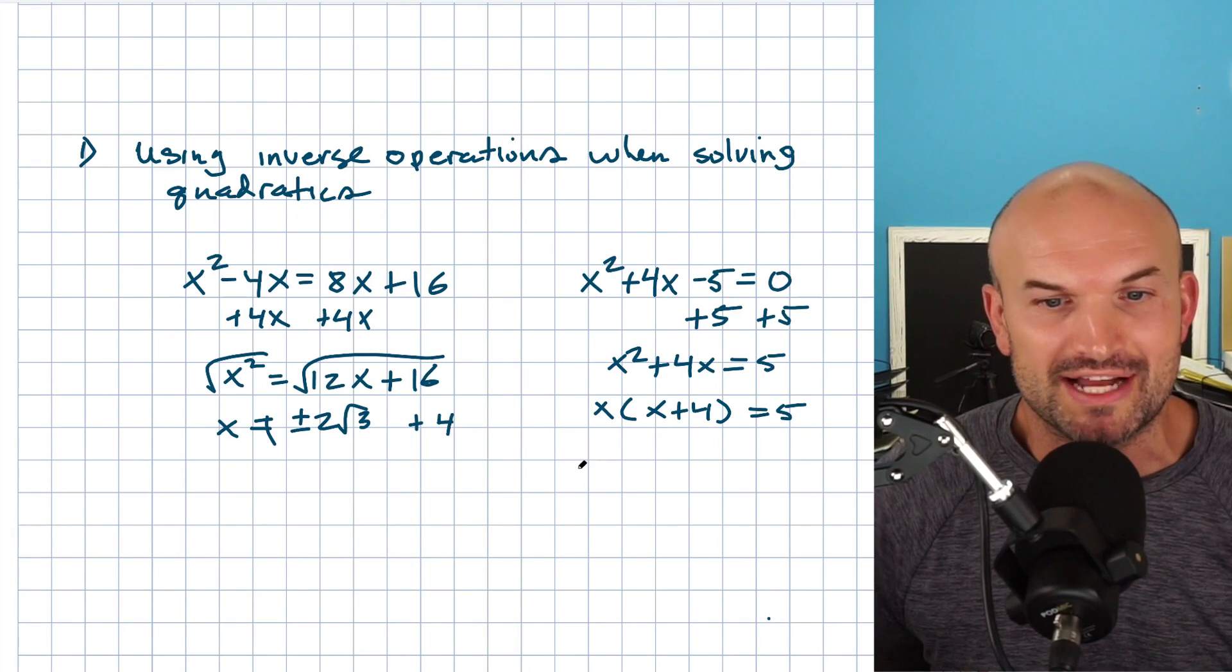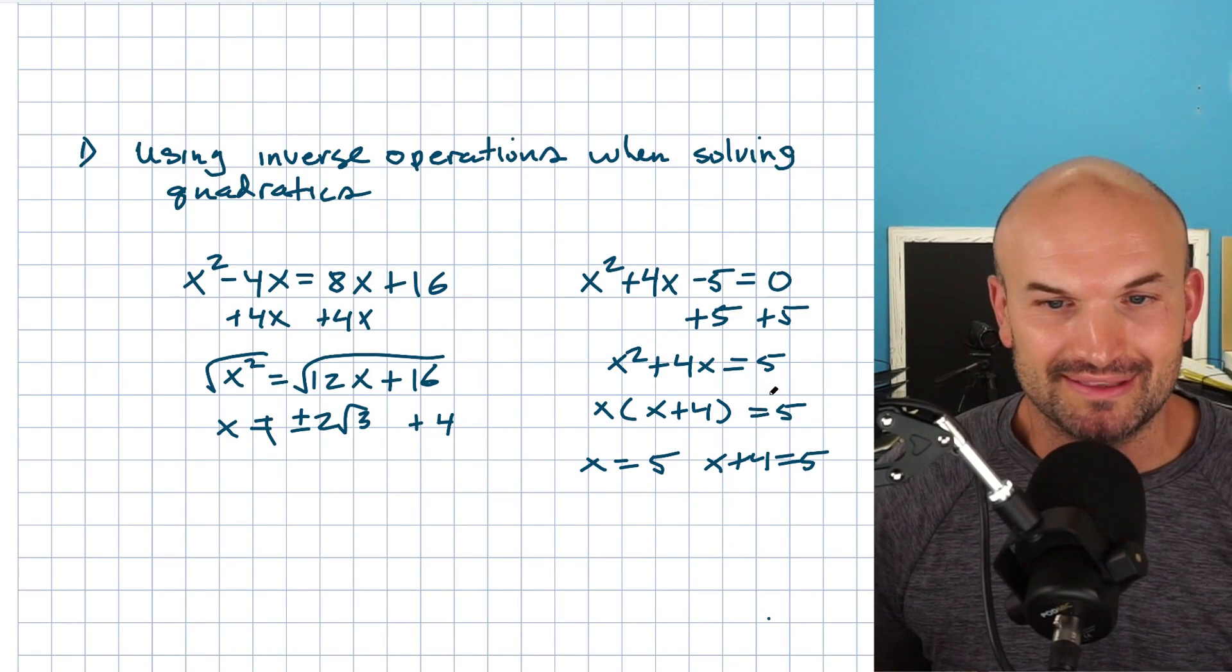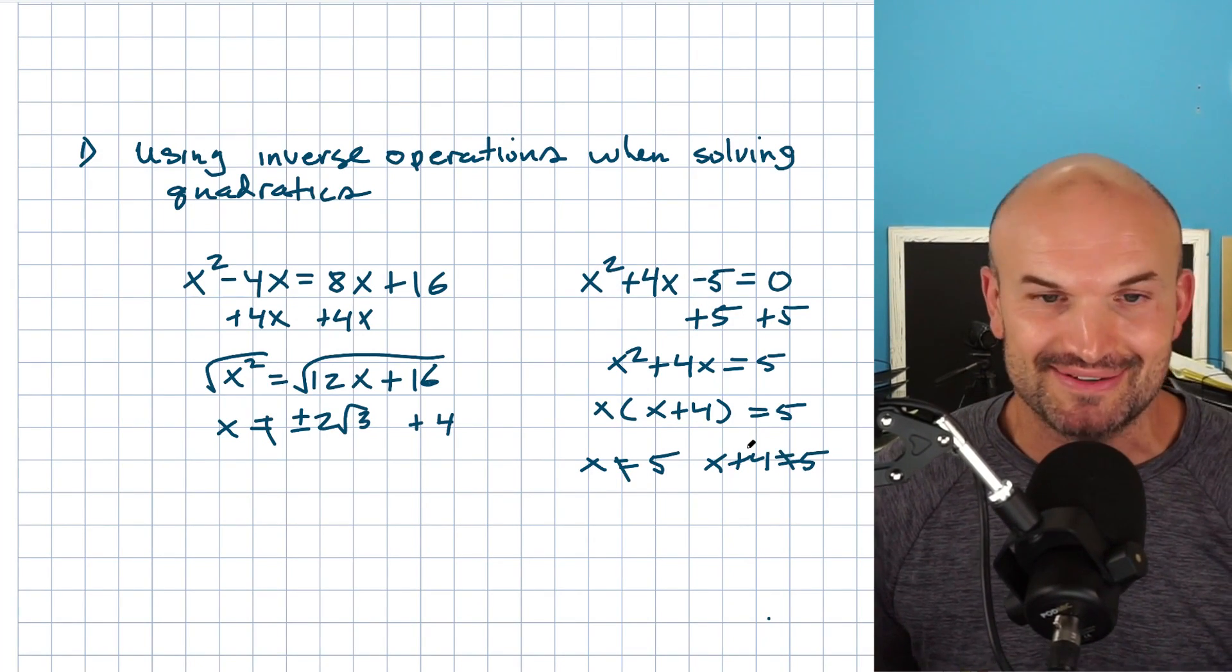And then I have an X times an X plus four equals five. And then let's use the zero product rule. X equals five and X plus four equals five. And again, hopefully you're following me. Ladies and gentlemen, this is not correct, right? So don't do this.